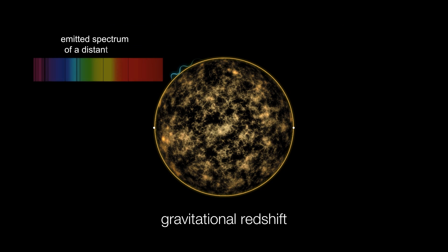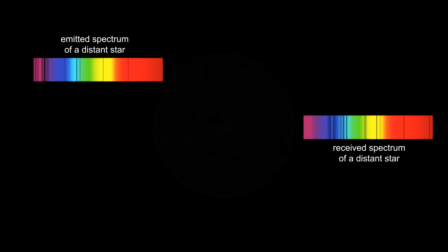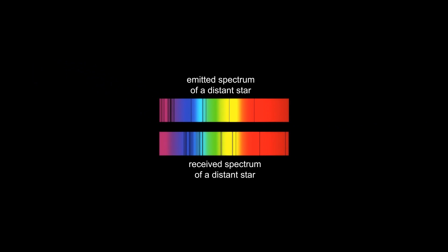The emitted light waves of a distant star become long wave. Thus, the absorption lines of the star's spectrum are gravitationally red shifted. We observe this phenomenon in form of displaced absorption lines.